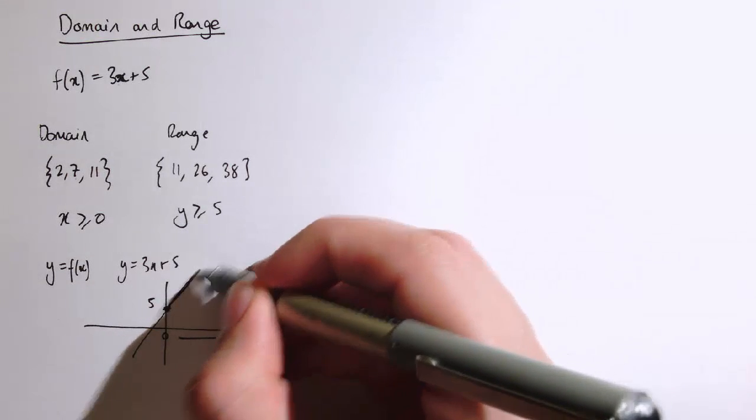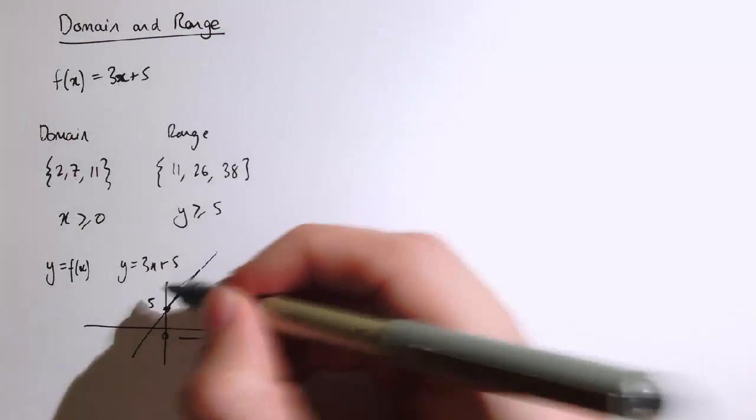If the possible input values of x are everything from 0 upwards, then the possible values of y are going to be all the y values of the corresponding points. It's everything from 5 upwards.